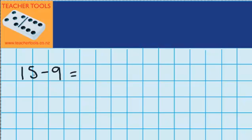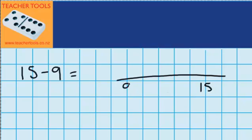Let's look at an easy example to start with. In addition we used counters and we were moving some counters from one pile to another, but in this lesson I want to think about a number line. So I've got 15 on it and I've got 9 on it. In subtraction I'm trying to find the distance between these two numbers.